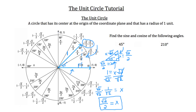The 30-degree angle is a 30-60-90 triangle. The 45-degree angle is a 45-45-90 triangle. The 60-degree angle is part of the 30-60-90. The 90-degree angle is just straight up — a value of 1. The 120-degree angle is just 30 degrees past 90, so it's still a 30-60-90. The 135-degree angle is 45 degrees past 90, so it's a 45-45-90, and so on.